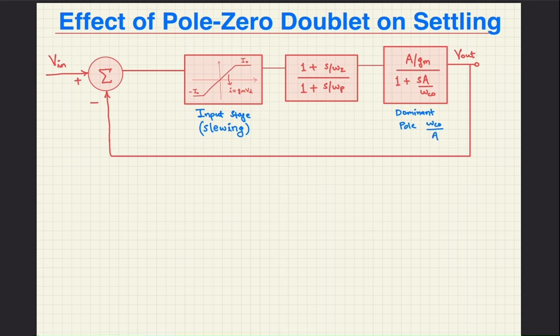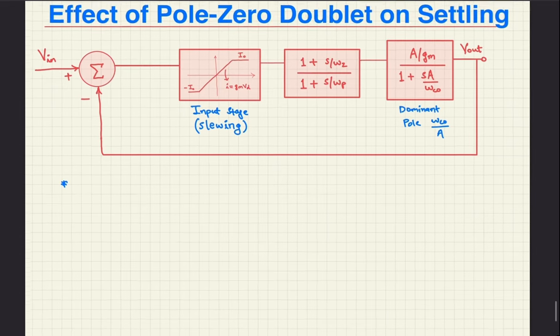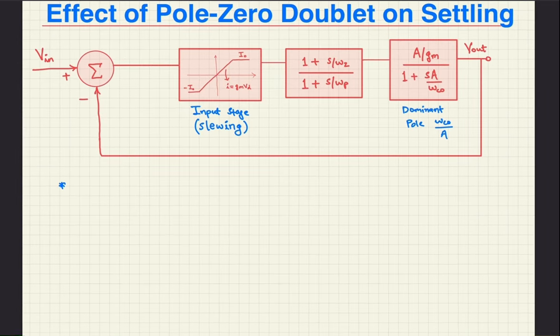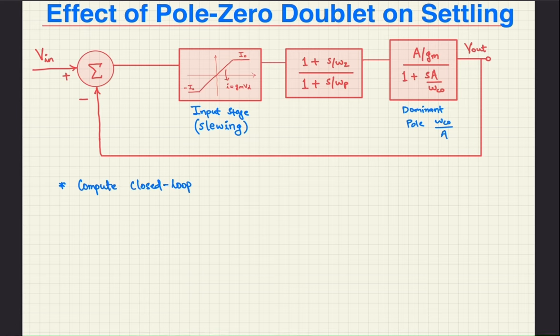The block diagram is as shown where the open loop DC gain is A, the unity gain bandwidth is represented by omega C0, and omega P and omega Z form the pole-zero doublet. Note that the open loop dominant pole is omega C0 by A.